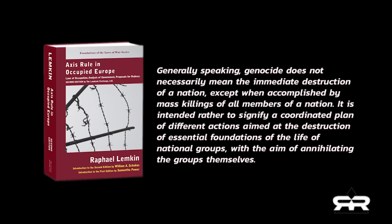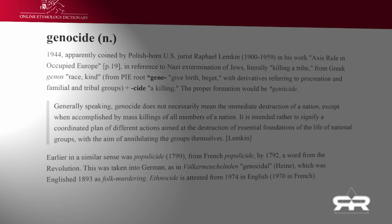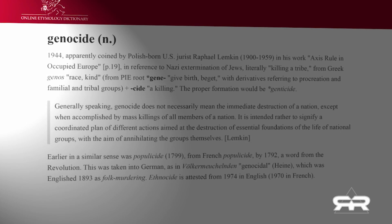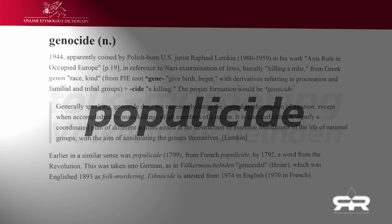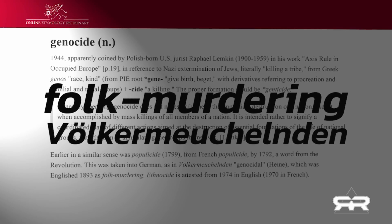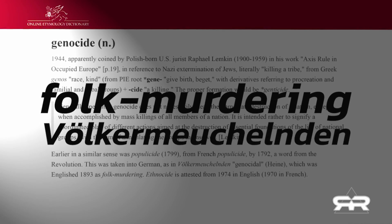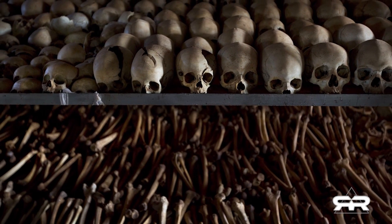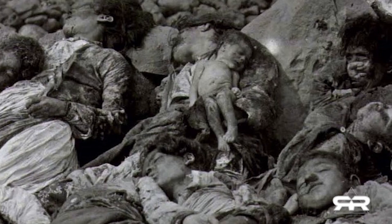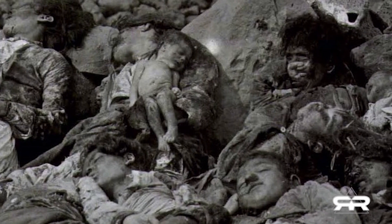The word genocide was coined in 1944 by Raphael Lemkin. It is the first word in the English language to denote something that has been around for all of history. In France it was known as populicide, and in Germany as folk murdering. Genocide is the age-old action of wiping out large groups of the local population, whether for economic reasons or non-compliance, and is always motivated by political power.